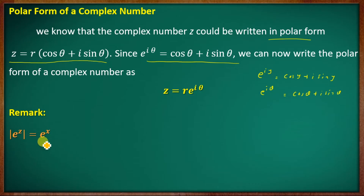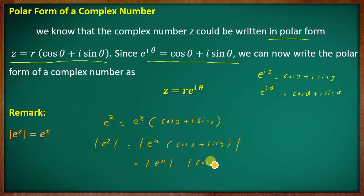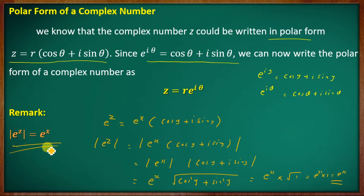Remark: modulus of e raised to z equals e raised to x. Now e raised to z equals e raised to x into cos y plus i sin y. So the modulus of e raised to x into cos y plus i sin y equals e raised to x — since e raised to x is always positive — times the square root of cos squared y plus sin squared y, which equals e raised to x times 1. Therefore, modulus of e raised to z equals e raised to x.